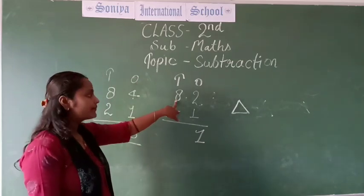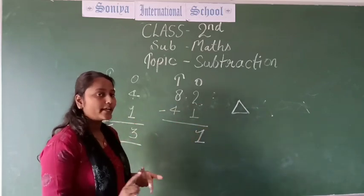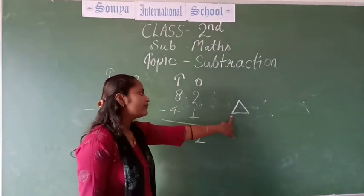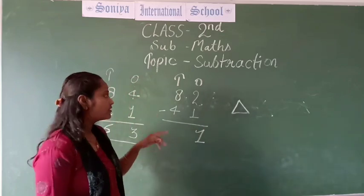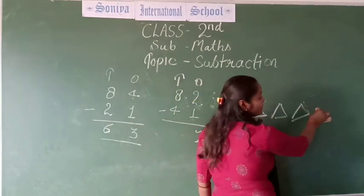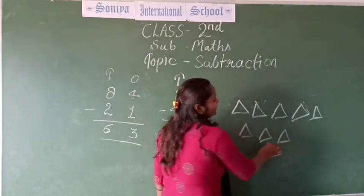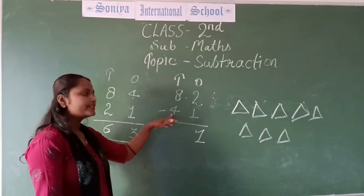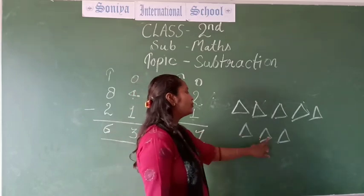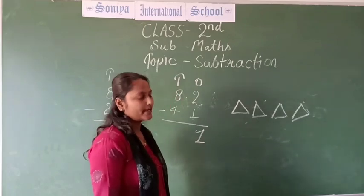Next, this is 8 and this is 4. So we are making how many triangles? 8 triangles. Because 8 is bigger and 4 is smaller. Always remember: bigger number first, then minus the smaller one. So we will make 8 triangles: 1, 2, 3, 4, 5, 6, 7 and 8. We are taking away 4 triangles: 1, 2, 3, 4. How many triangles are left? 4 triangles.